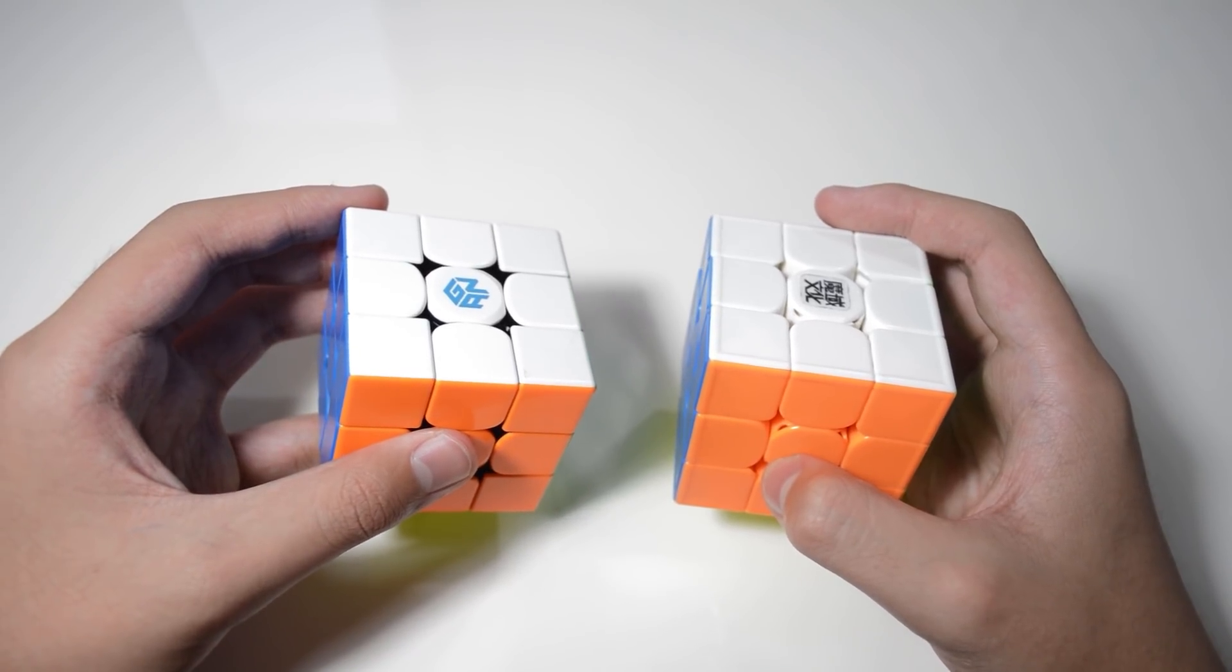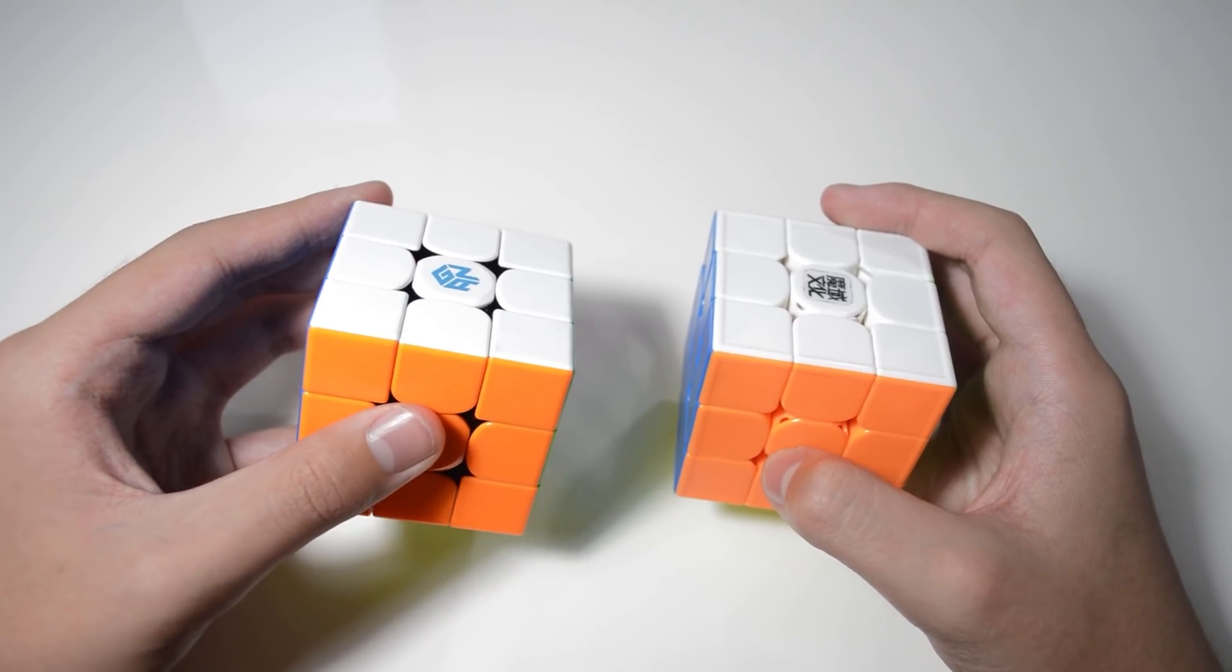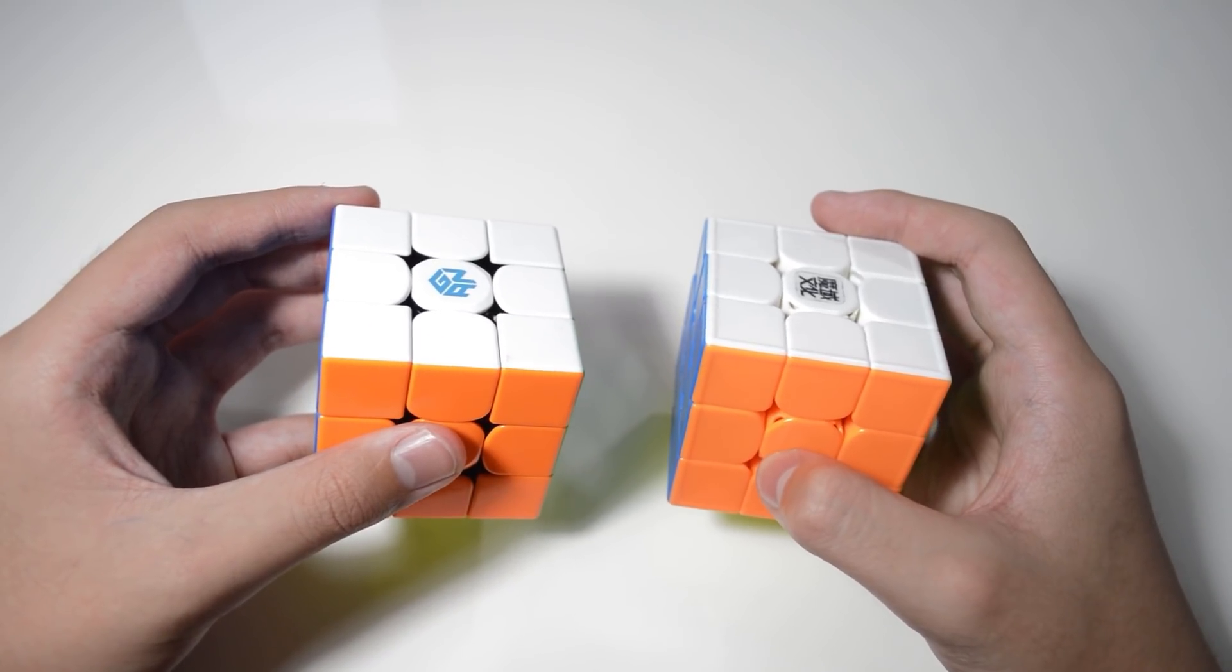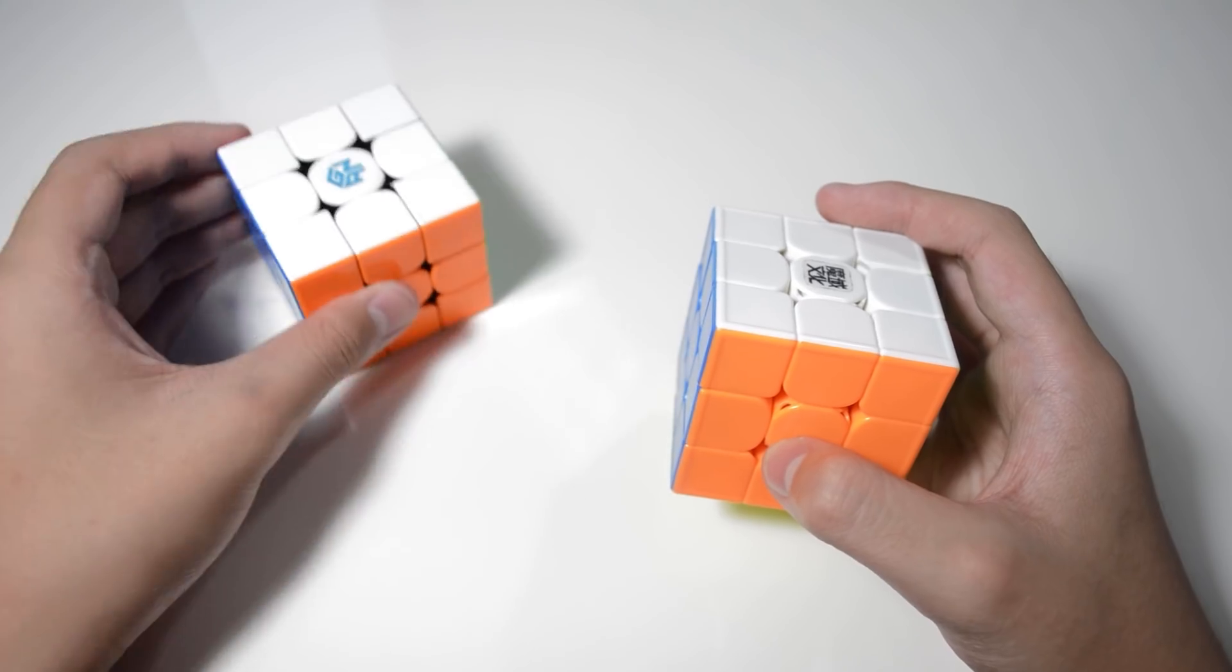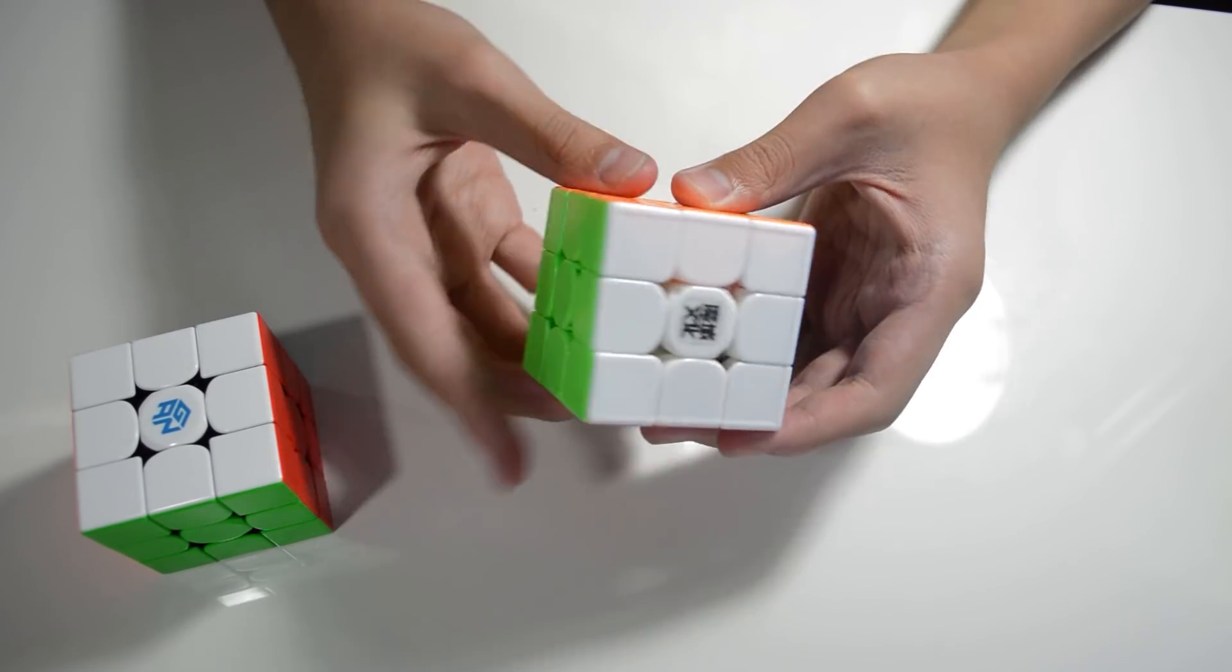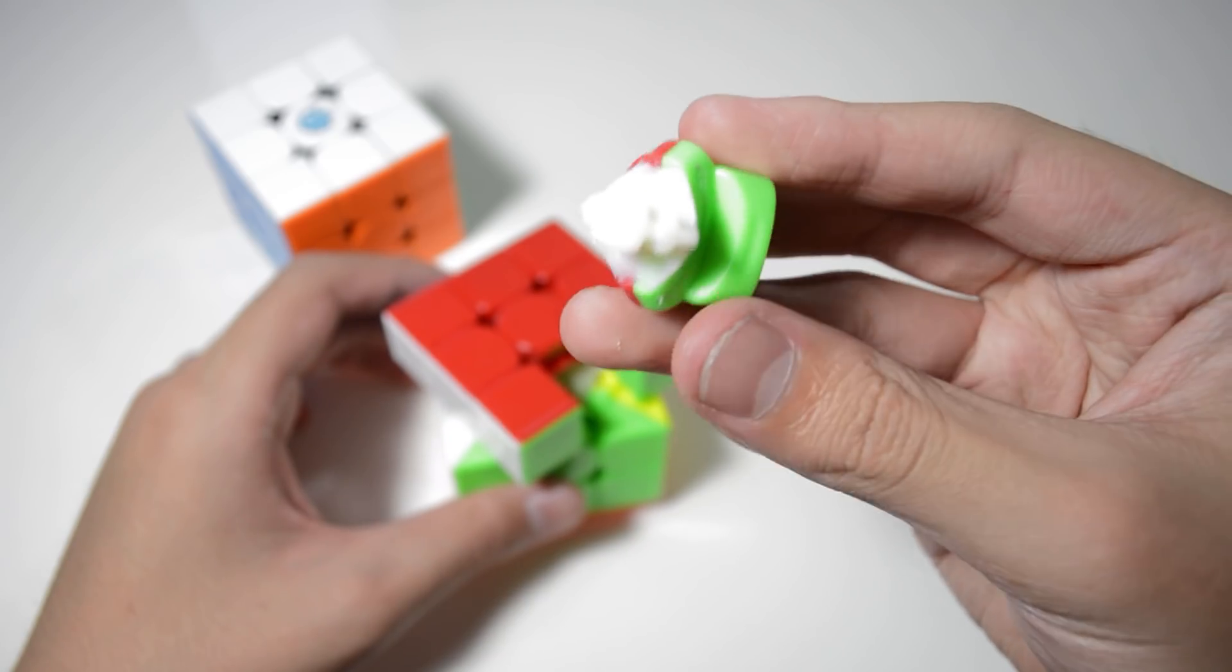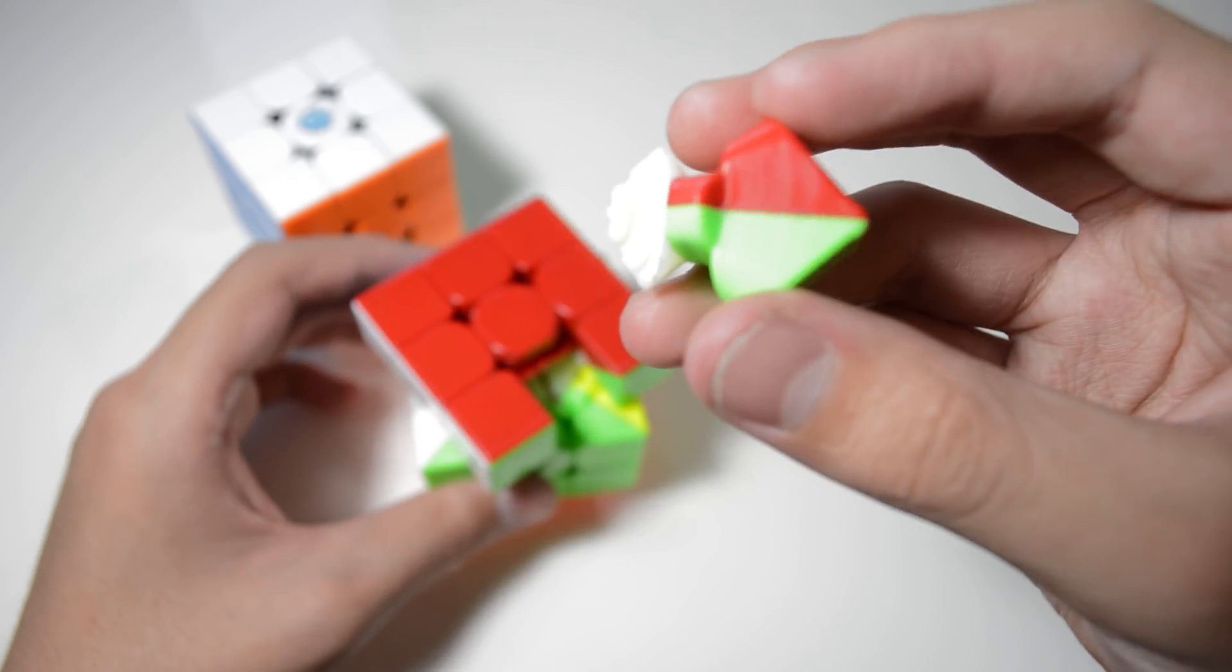Both of these cubes are top of the line puzzles currently in the 3x3 market. Let's begin with by far the most striking difference between these two puzzles, and that is the feeling and sound. The GTS-3M is smooth, but at the same time is loud and crunchy.